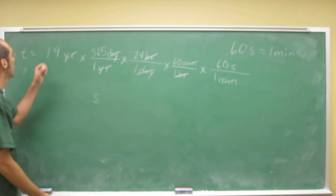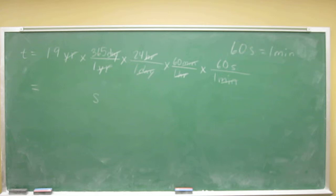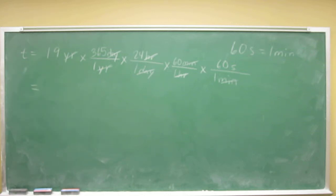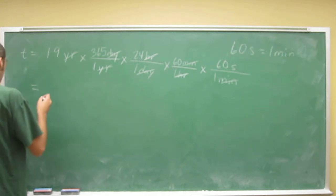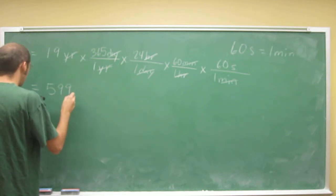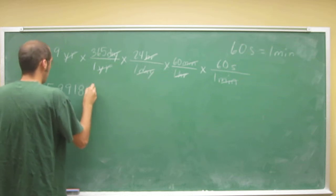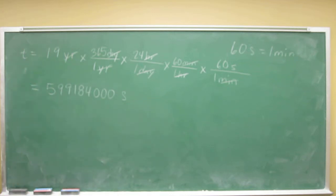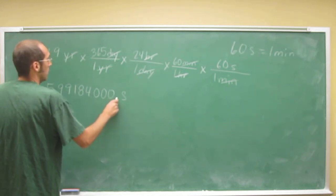So it gives it to us in two sig figs. Let's just keep it at two sig figs, and we'll do it in scientific notation. We'll write down what the calculator says. So 19 times 365 times 24 times 60 times 60. My calculator reads 599184000 seconds. That's a lot of seconds. But that's not the right answer because you've got to do it to two sig figs.